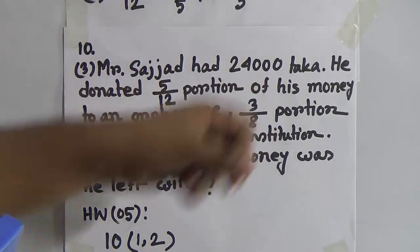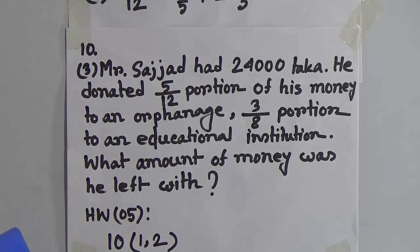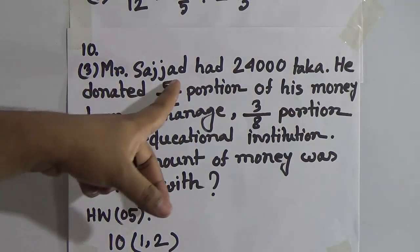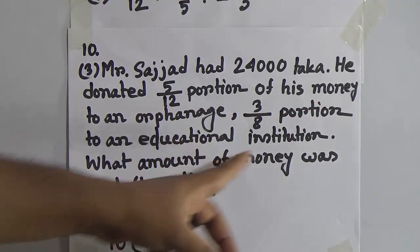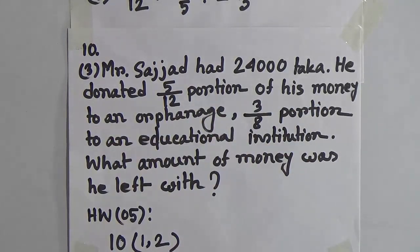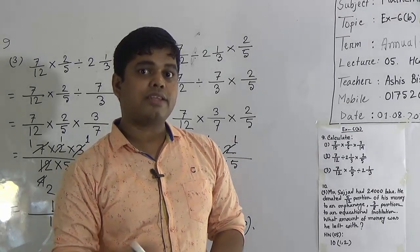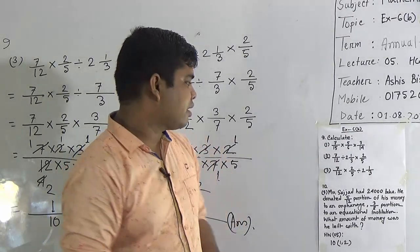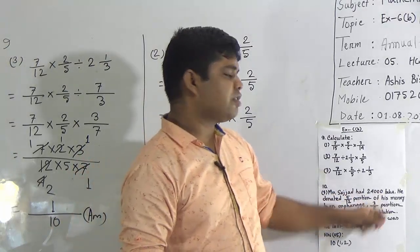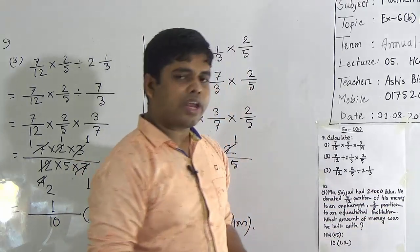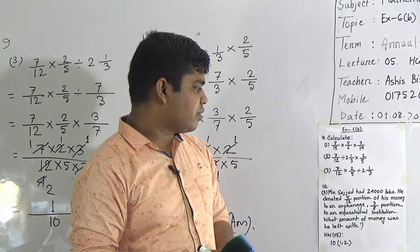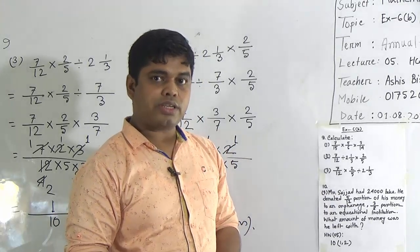Mr. Sajjad had 24,000 takas. He donated 5 by 12 portion of his money to an orphanage, and 3 by 8 portion to an educational institution. What amount of money was he left with? So, how can we solve this math? When we want to solve a word problem, at first we make a plan. If we can make a plan, it is easier for us to solve the math.